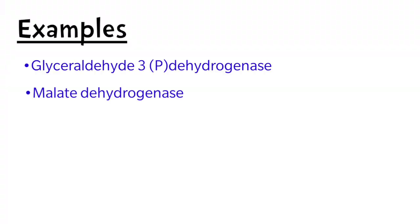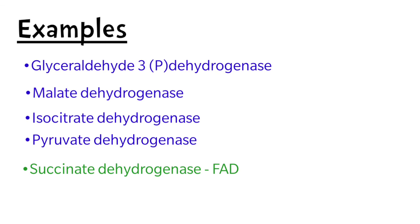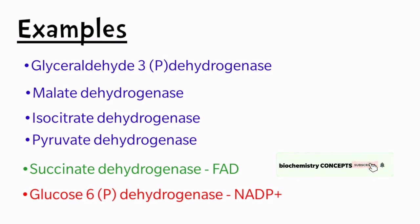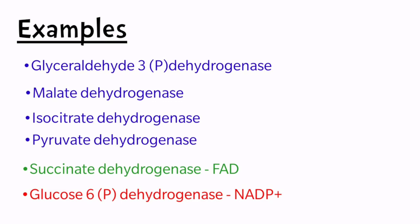Coming to the examples of dehydrogenases: glycerol-3-phosphate dehydrogenase, malate dehydrogenase, isocitrate dehydrogenase, and pyruvate dehydrogenase all require NAD⁺ as the coenzyme. Succinate dehydrogenase requires FAD as the coenzyme, and glucose-6-phosphate dehydrogenase requires NADP⁺ as the coenzyme. All these enzymes are examples of dehydrogenases.